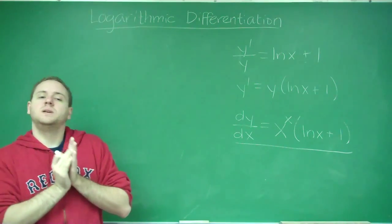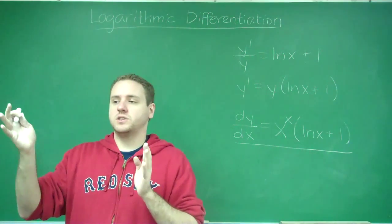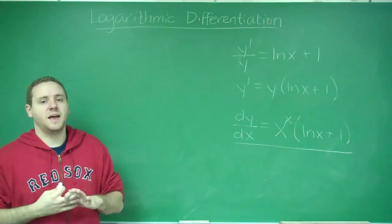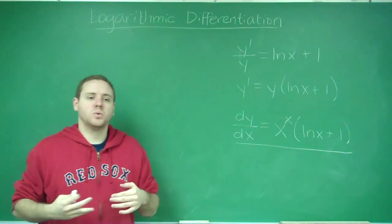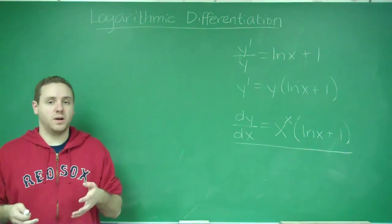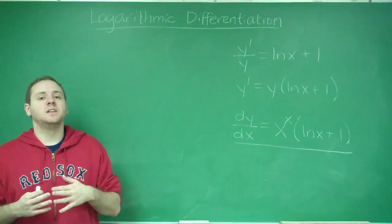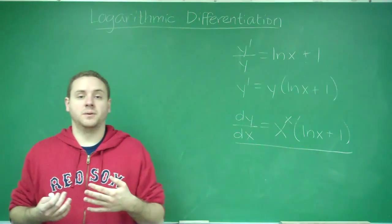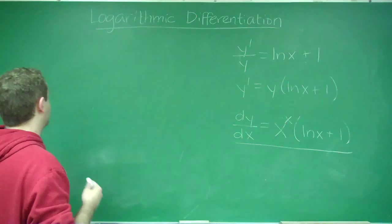If you have a product of three different functions, or two functions on a numerator and one on the denominator, or something like that, if you try to use product or quotient rule, it gets really hectic because you're going to have to use multiple steps of product rule or quotient rule. Instead, using logarithmic differentiation is going to be better. So let me give you an example real quick.